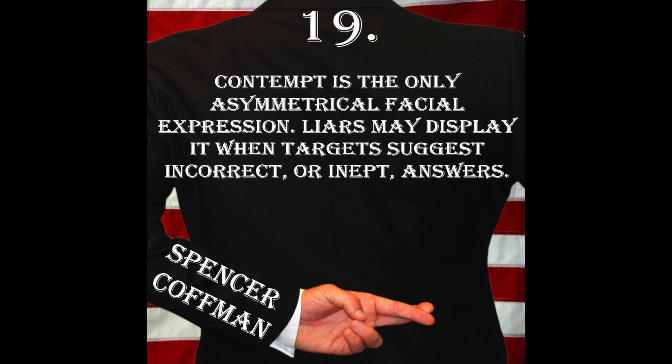Contempt is a pretty easy emotion to spot because it only happens on one side of the face — it is the only asymmetrical facial expression. Typically it will happen on the right side of the face because the right side is controlled by the left cerebral hemisphere, which is most of the time associated with truthful, positive, true emotions. The right cerebral hemisphere is associated with the left side of the face and is more prevalent in false emotions or lying behavior.